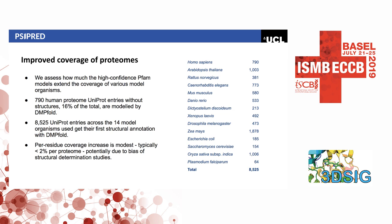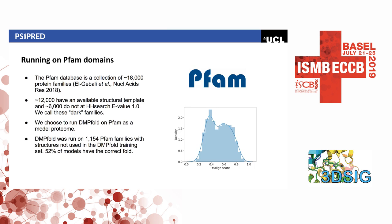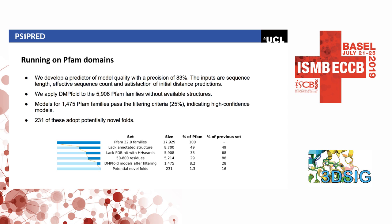Q: For the 75% of Pfam families where you did not make a model or the quality assessment said the model was not good enough — is there something special about these, or is it just smaller families? A: The model quality predictor uses sequence length, effective sequence count, and how well the model fits the distance prediction. The most important factor is the effective sequence count, so it's generally smaller families, and also larger proteins.